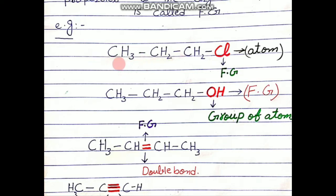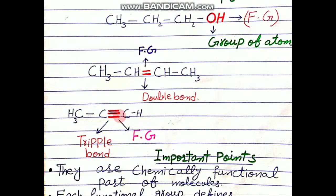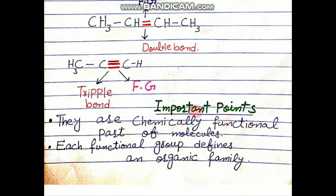For example, in compounds: in the first compound, chlorine is its functional part — it is an active part, it is one atom, and it is the functional group. In another compound, the hydroxyl group is the functional group, and it gives that entire compound a specific identity and properties. Similarly, a double bond or a triple bond gives the entire compound a distinct identity. These are all functional parts, or functional groups.